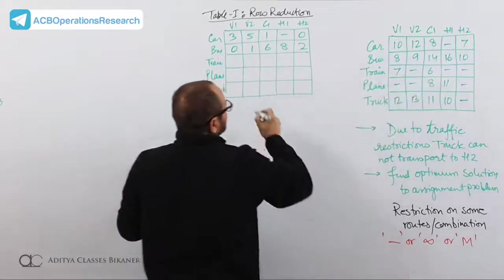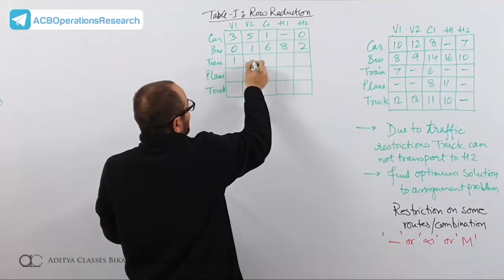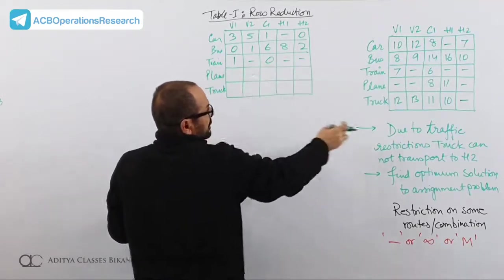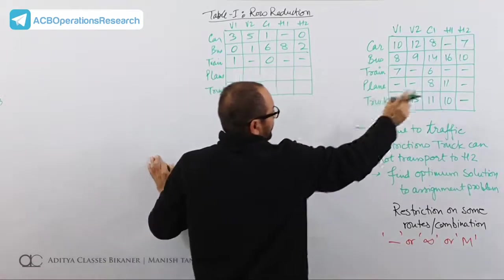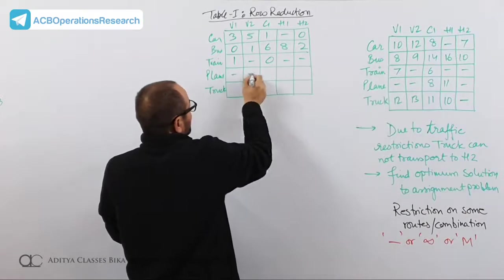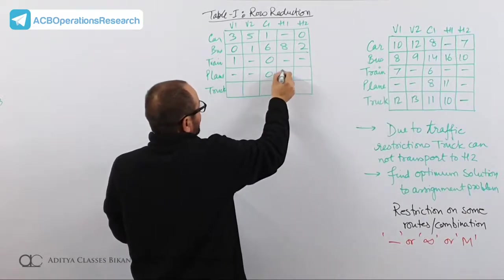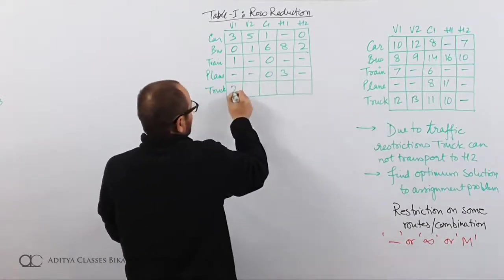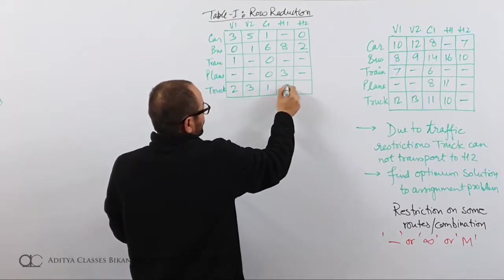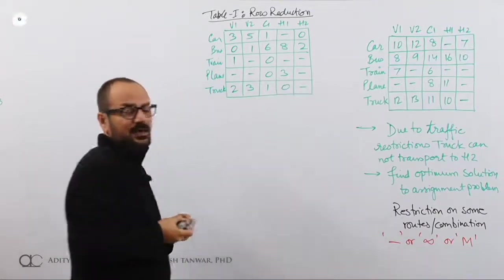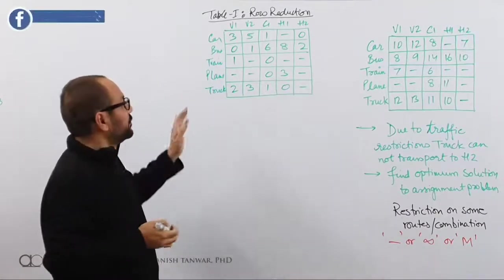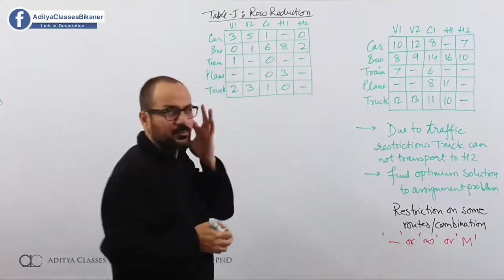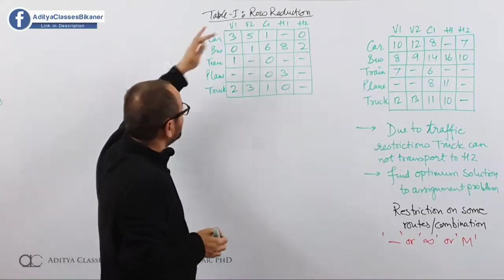Continuing row reduction: the third row minimum is 6, giving 1, dash, 0, dash, dash. The fourth row minimum is 8, giving 0 and 3. The fifth row minimum is 10, giving 2, 3, 1, 0, dash. After row reduction, each row has at least one zero. Now I need to go for column reduction, and we see that 4 columns are already reduced — only one column still needs reduction.